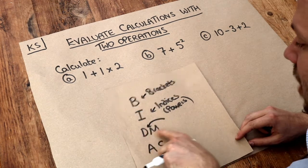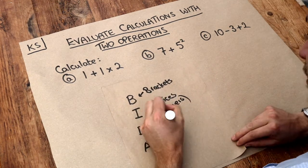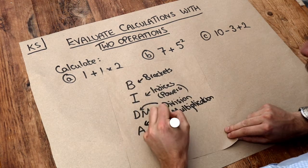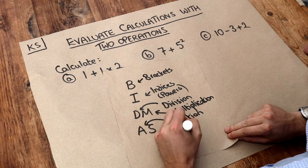D stands for division, and I'll explain why these are on the same level in a second. M stands for multiplication. A stands for addition, and S stands for subtraction.